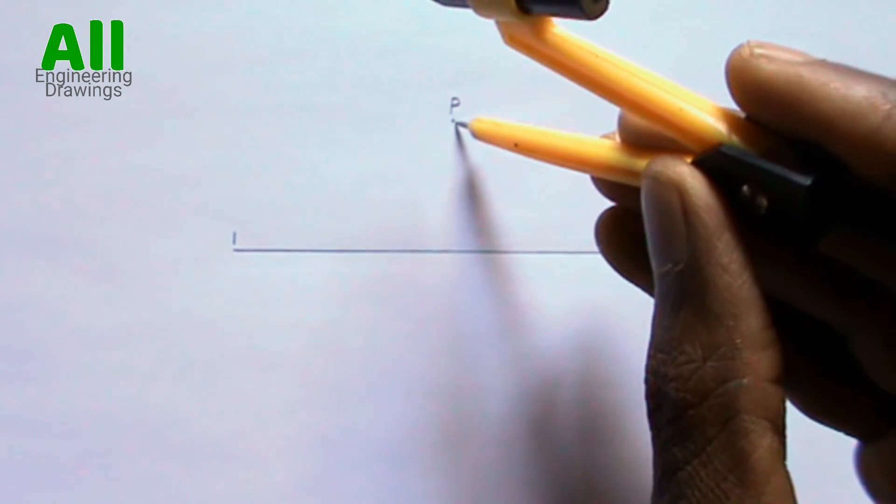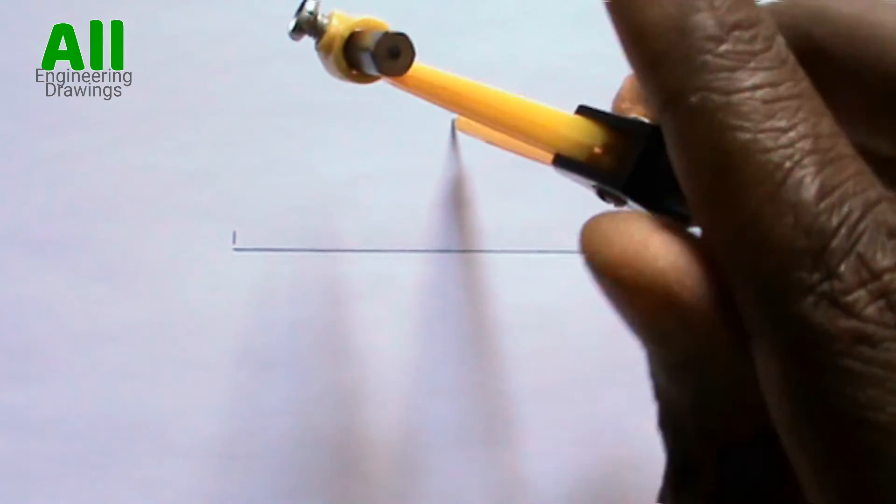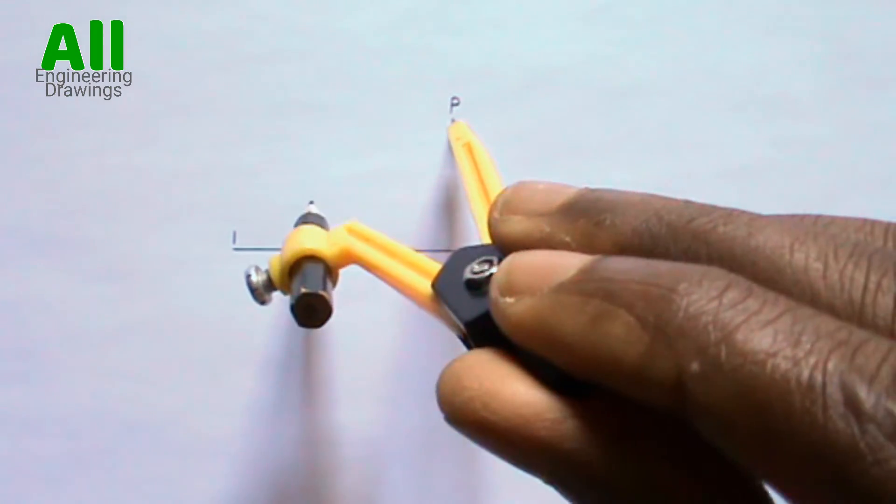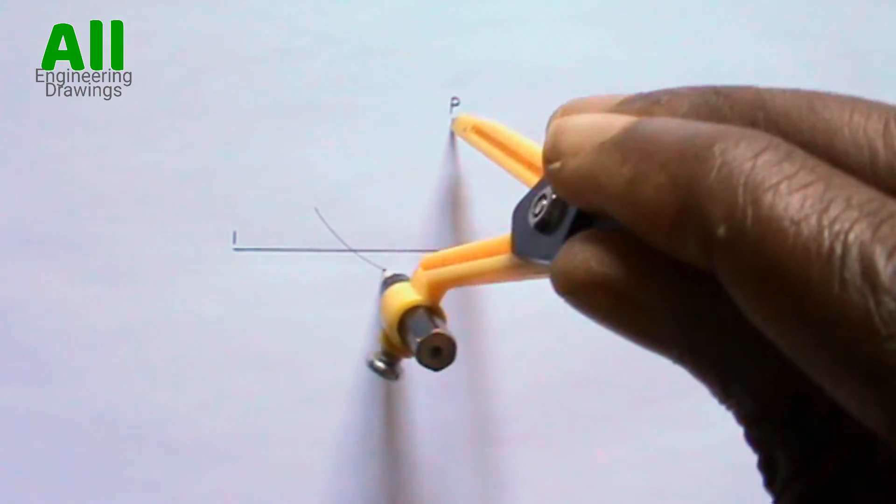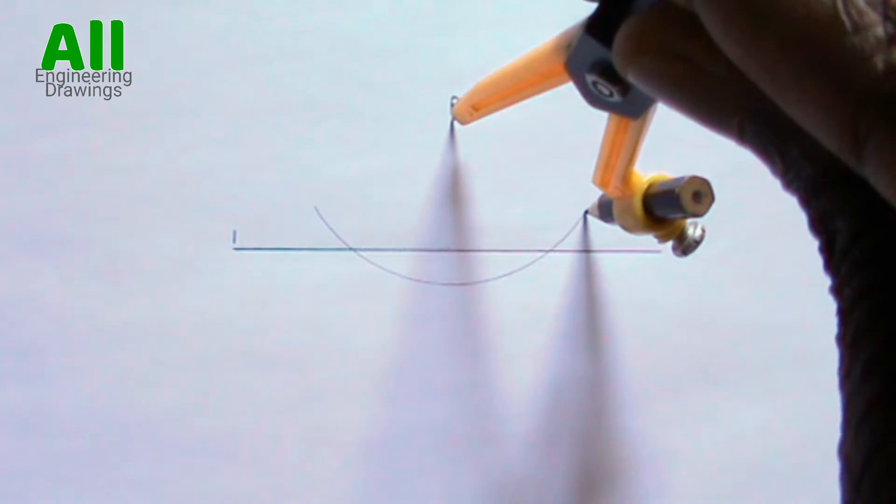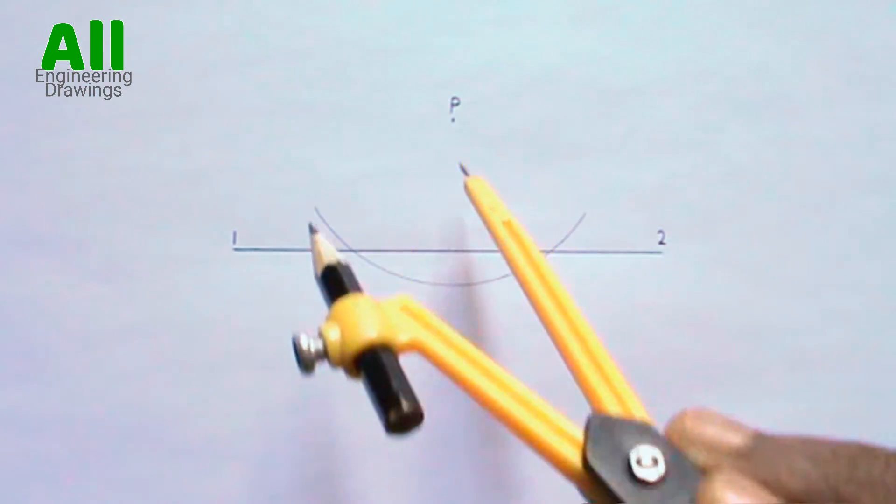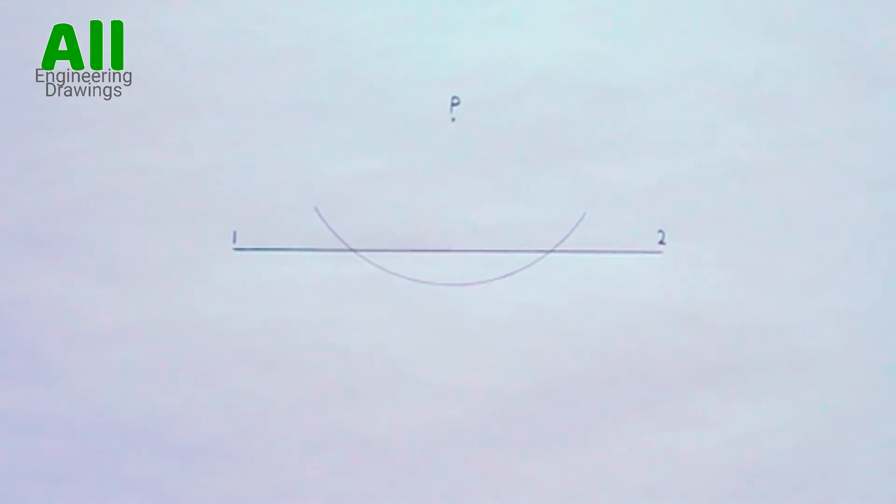Now place your compass on point P, that is the point you marked. Then draw an arc to intersect your line this way. Label the point where the arc intersects your line.